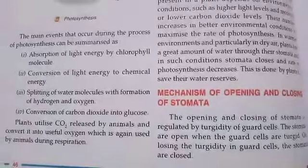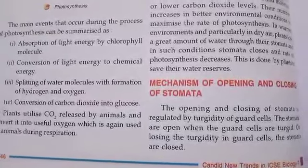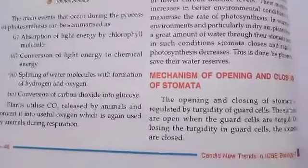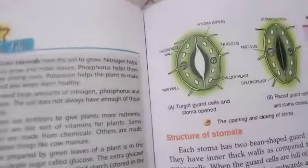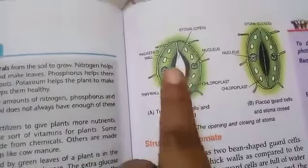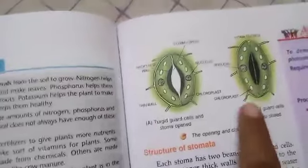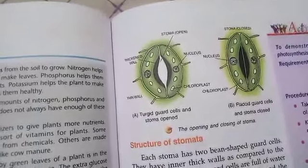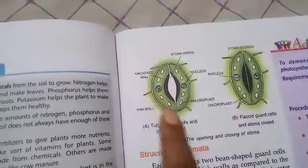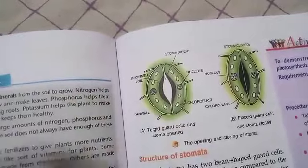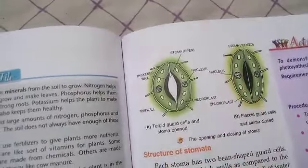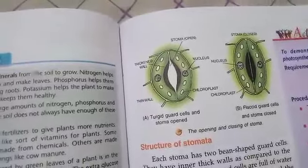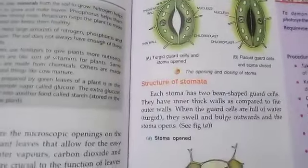The opening and closing of stomata is regulated by the turgidity of the guard cells. Turgidity means the guard cells are filled with water. Stomata are open when the guard cells are turgid, and close when they lose turgidity — a state called flaccidity. In the picture, the white gap is the open stomata, and the closed form shows flaccid guard cells.